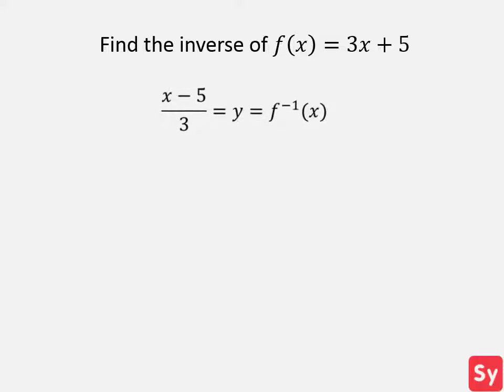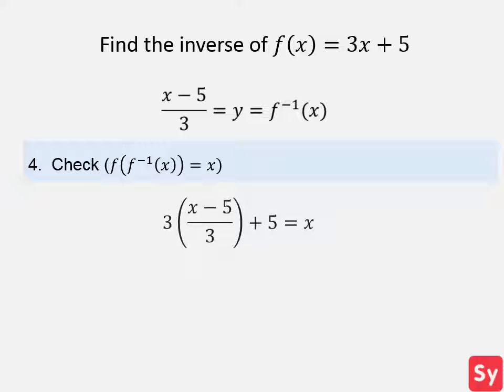Finally, we will check that the inverse is correct using this equation. We plug the inverse in for x and f of x, and it equals x. So x minus 5 over 3 is the inverse.